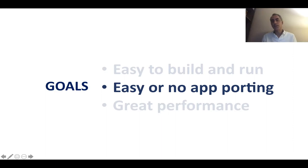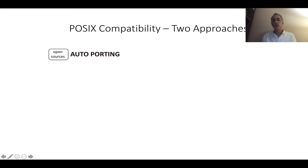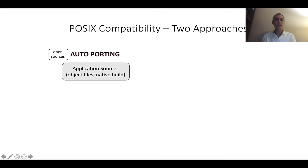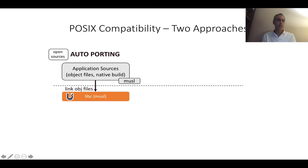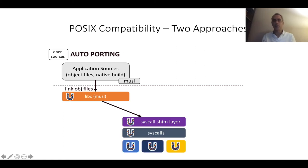The second goal is that we should be able to run applications without having to port them, or it should be easy. We have two approaches to POSIX compatibility. The first one we call auto-porting. In this case, we assume we have access to the sources like Nginx, Redis, or SQLite. What we do is build them with the native build system, but against Musl. Then we link the resulting object files into Unicraft. We have our own ported version of Musl, and then Musl requires syscalls, so we have a syscall shim layer. Under that, we have our own implementation of syscalls that go to the different Unicraft kernel libraries.